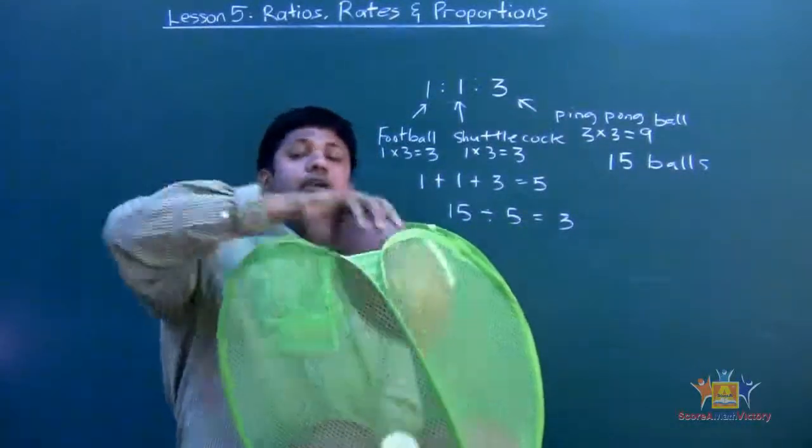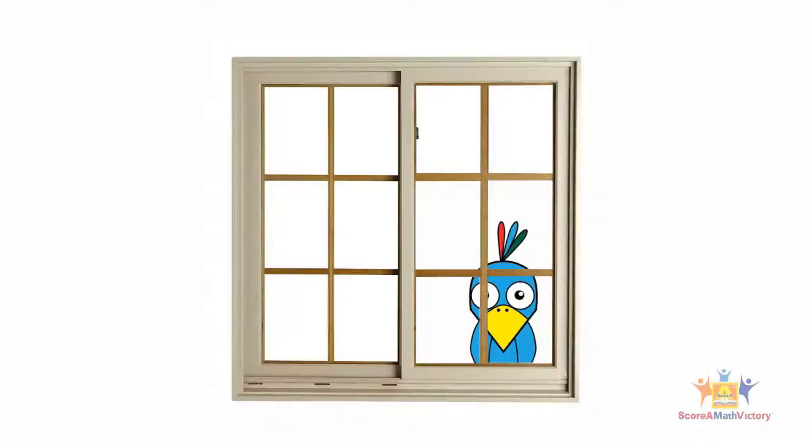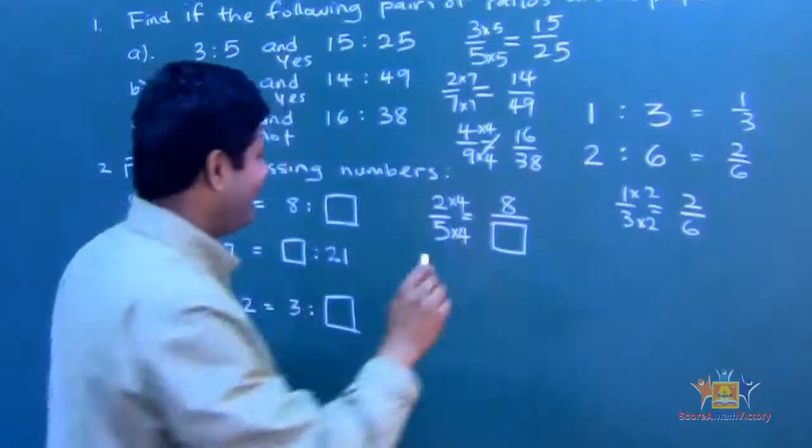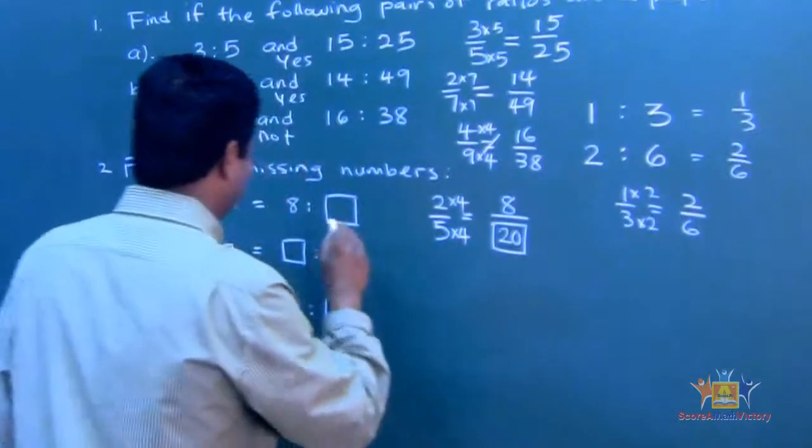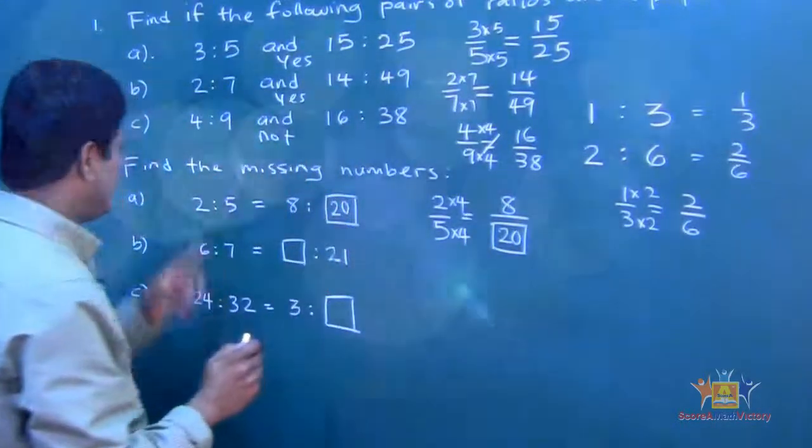Let's see, we got 1, football, there you go. So the missing number is 20, so the proportion.